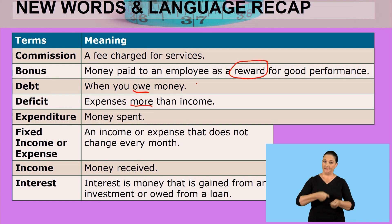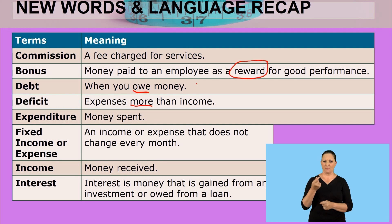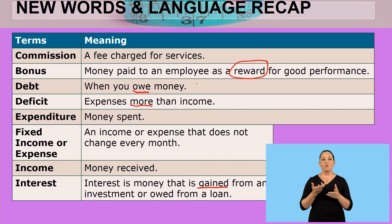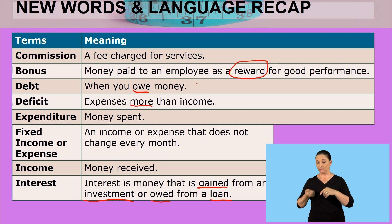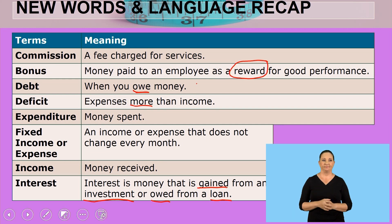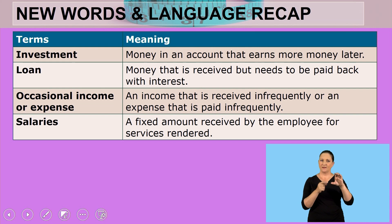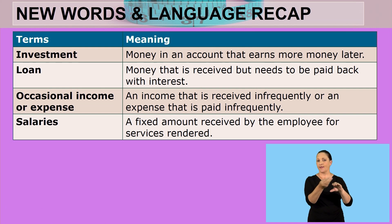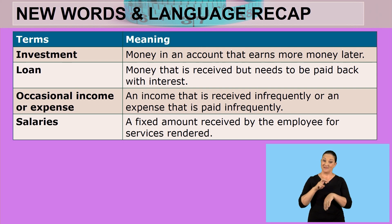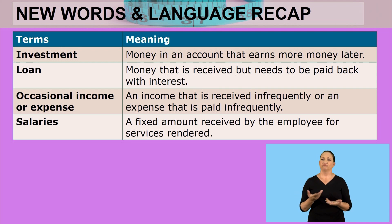Expenditure — money spent. Fixed income and expense — an income or expense that does not change every month. Income — money received. Interest — money that is gained from an investment or owed from a loan. Investment — money in an account that earns more money later.